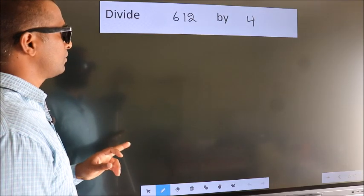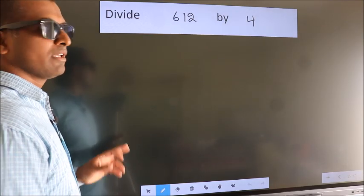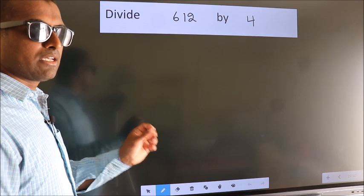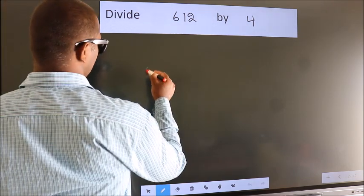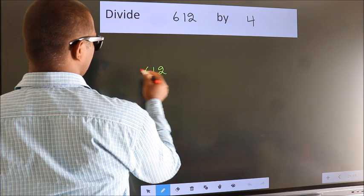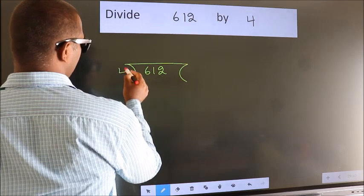Divide 612 by 4. To do this division, we should frame it in this way. 612 here, 4 here.